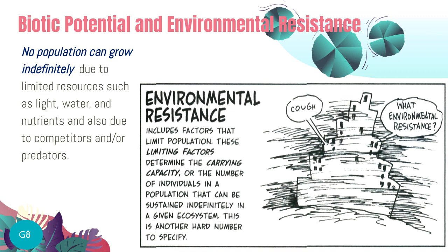Environmental resistance is the other force that maintains balance in an ecosystem. Environmental resistance refers to factors that limit the population — it counters biotic potential. Biotic potential drives an increase in population, while environmental resistance limits population growth. These are called limiting factors.